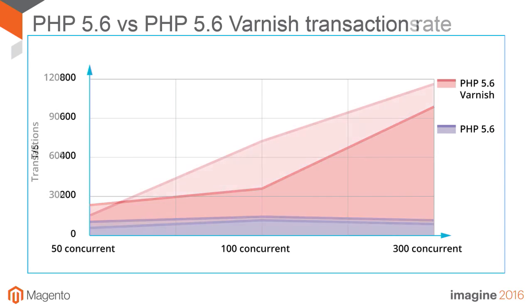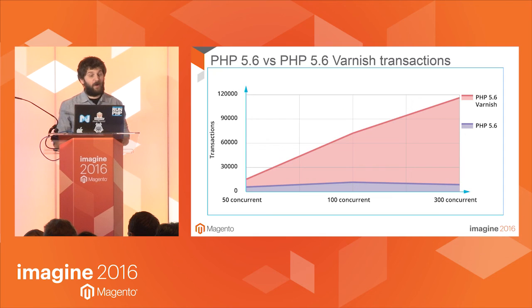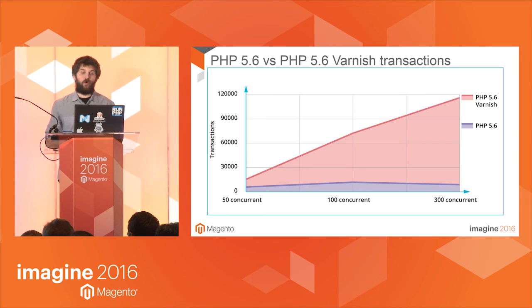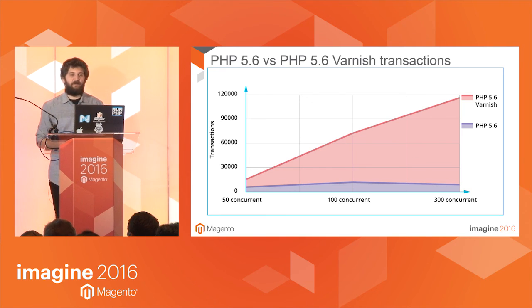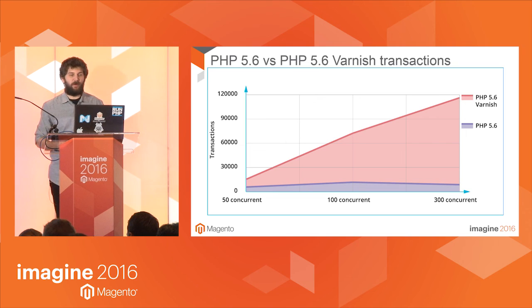Moving to total transactions: with 300 concurrent users, transactions handled were almost nine times higher with Varnish. With 100 concurrent users, transactions handled were likewise five times higher with Varnish, and with 50 concurrent users, the transactions handled were almost doubled. With Varnish, this server was able to handle nine times the transactions versus a server running PHP 5.6 without it, handling 300 concurrent users without any performance decrease.